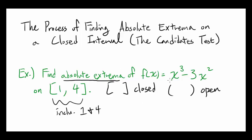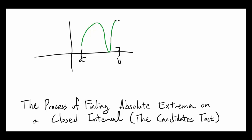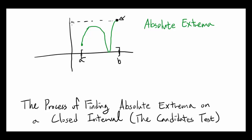So how can we find this for f(x) = x³ - 3x²? Think of it this way: let's say you have a function and you're looking at it from a to b on a closed interval. The function does something like this, going from a to b.